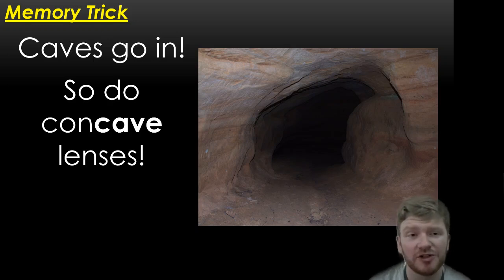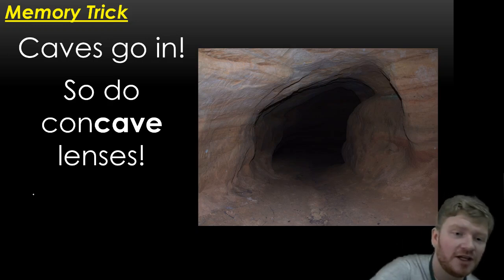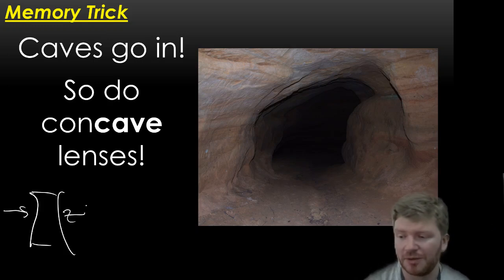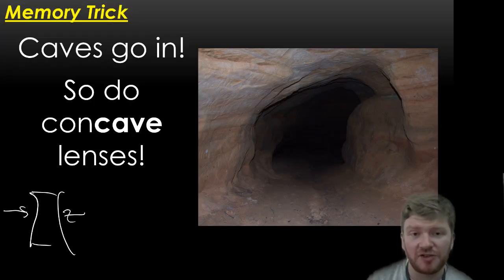One last thing I forgot to mention earlier. A little memory trick to remember which is a concave and which is a convex. Caves go in. So a concave lens looks like that because there are caves going in on either side. That might just help you to remember it. Thanks for watching and I will see you in our lesson.